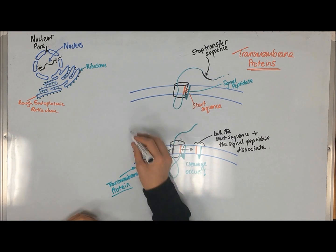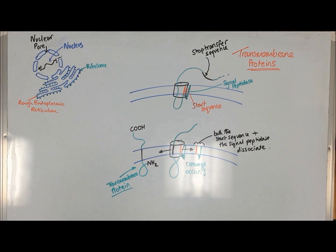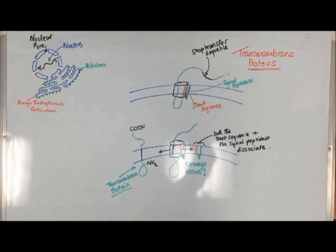Use this video to create a model answer for the following question: Explain the signal hypothesis and the two proteins that are produced using membrane-bound ribosomes.